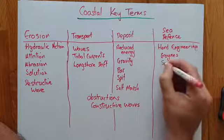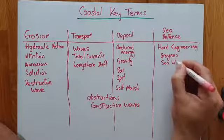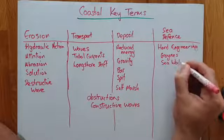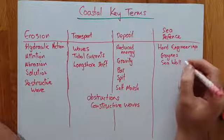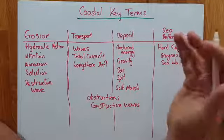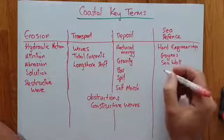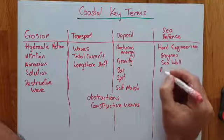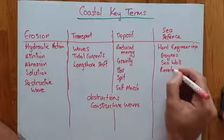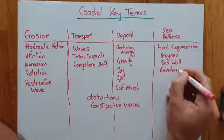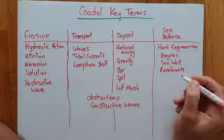The sea wall is just a big thick concrete or hard stone wall that breaks up the energy when the waves come in, stopping flooding of the town.